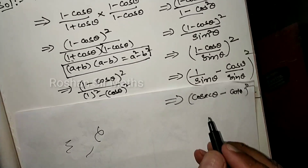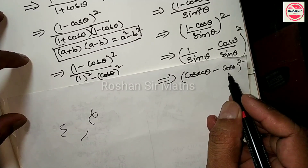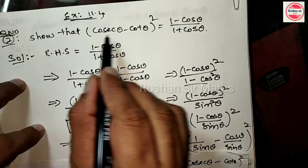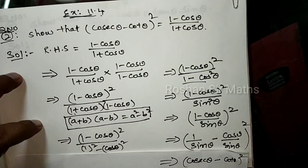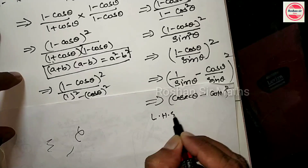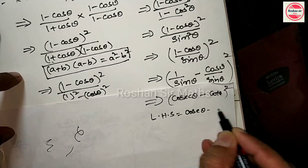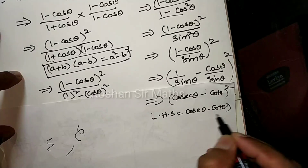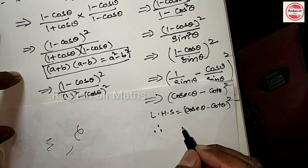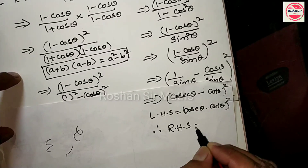यह हो गया। (cosec theta minus cot theta) whole square। अगर आप numerator में देखेंगे तो हमको answer आ चुका है: (cosec theta minus cot theta) whole square। इस तरह RHS = LHS, proof complete।